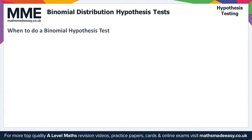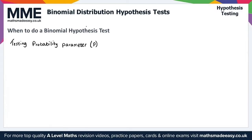For a binomial hypothesis test, you're going to be testing the probability parameter P. In a normal hypothesis test, you're going to be testing the mean parameter mu. That gives us a key difference to help determine which test we would be doing.